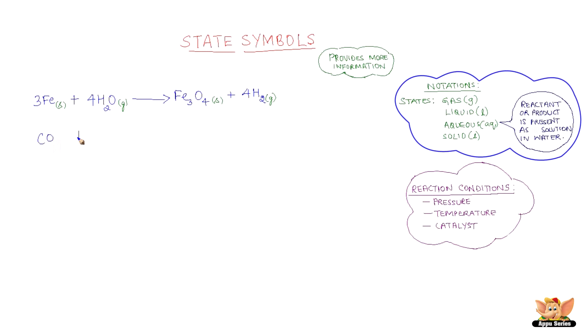We have another example. Carbon monoxide reacts with hydrogen forming methyl alcohol or methanol at a pressure of 340 atmospheres. Carbon monoxide is gas.